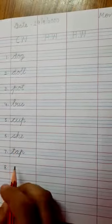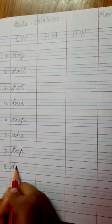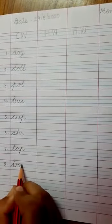Tap and the last word is boy and the spelling of boy is B-O-Y.